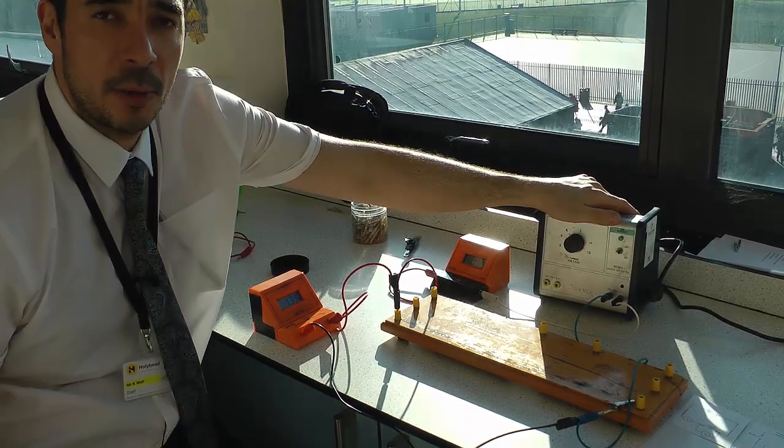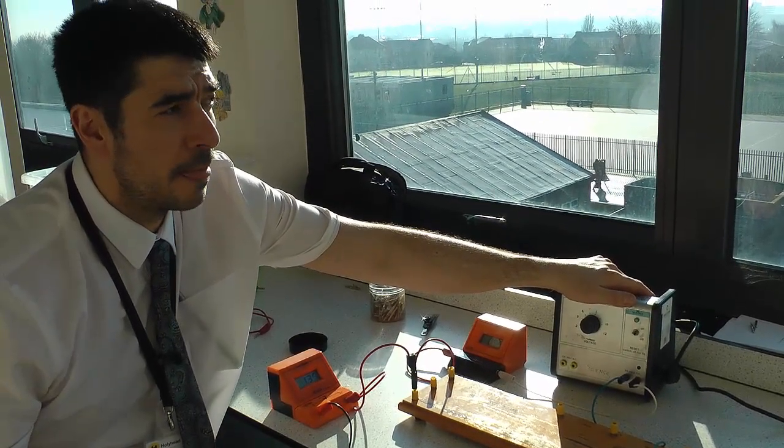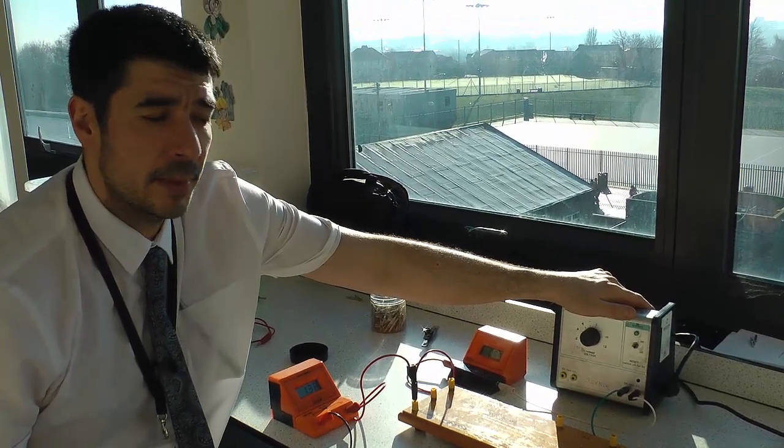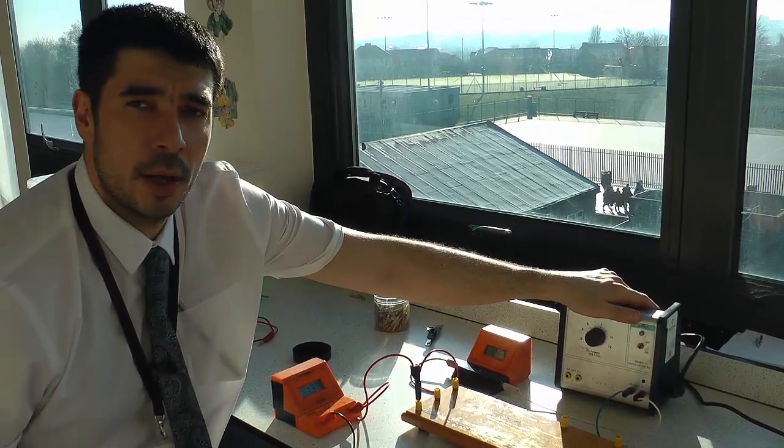So I could calculate the resistance by using Ohm's law, V equals IR, rearranging for R, which is V divided by I. Okay, so that's how you do the resistance of a wire practical.